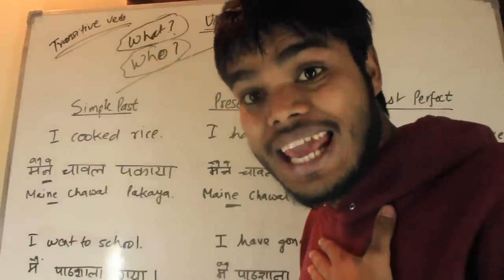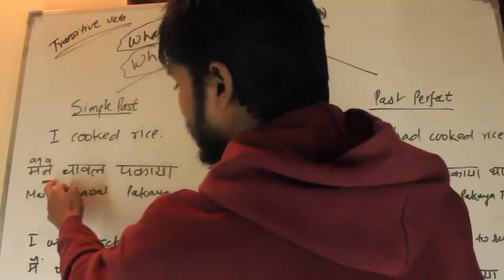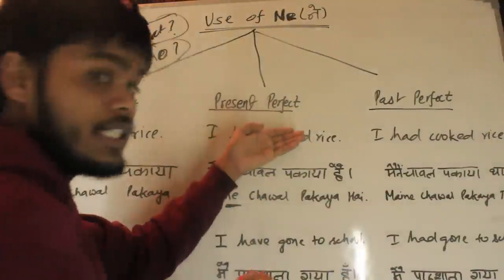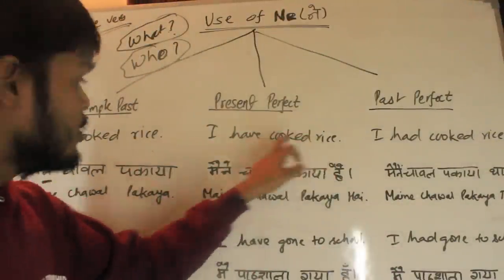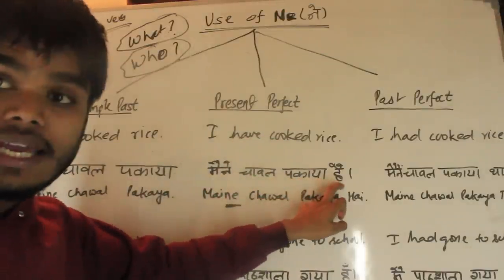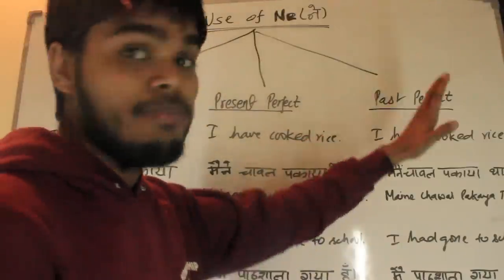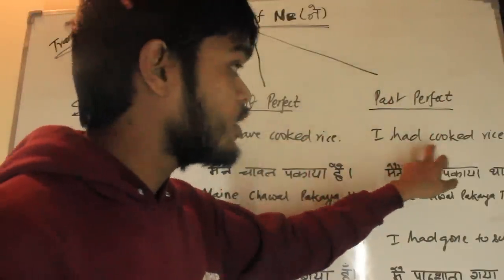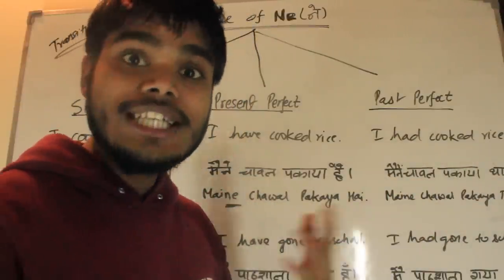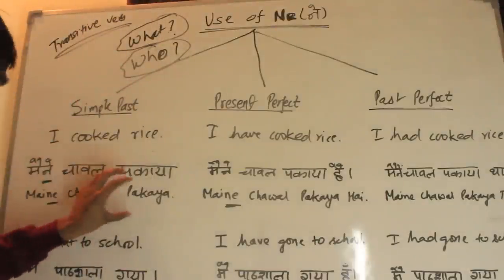Since 'cook' is a transitive verb, the subject takes Ne. So 'I' in Hindi is 'main,' and with Ne it becomes 'maine.' So: 'maine chawal pakaya.' In present perfect tense: 'I have cooked rice' — 'maine chawal pakaya hai.' In past perfect tense: 'I had cooked rice' — 'maine chawal pakaya tha.' Remember, 'maine' is used here because cooking is a transitive verb.